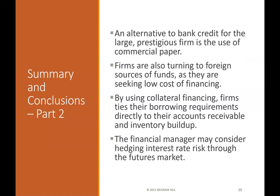Summary and Conclusions continued: An alternative to bank credit for large, prestigious firms is the use of commercial paper. Firms are also turning to foreign sources of funds seeking low-cost financing. By using collateral financing, firms tie their borrowing requirements directly to their accounts receivable and inventory build-up. The financial manager may also consider hedging interest rate risk through the futures market.